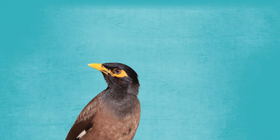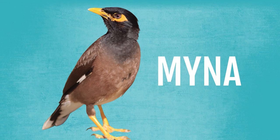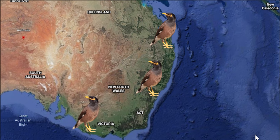In Perth you have a similar species called the yellow-throated miner. And the other miner, the common or Indian myna, M-Y-N-A, is an introduced bird found in Victoria, New South Wales and Queensland.